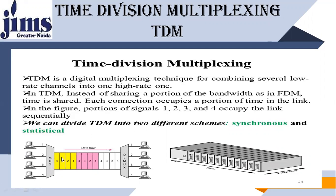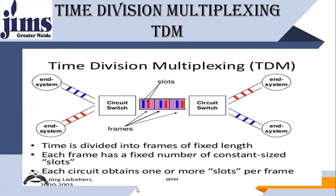Looking at this figure, we have different sources 1, 2, 3, and 4 going into a multiplexer. The yellow frames belong to source 1, another color to source 2, another to source 3, and so on. Data belonging to each source flows across the same shared medium at the same wavelength. The demultiplexer then separates data according to user 1, 2, and 4. In TDM, a frame consists of slots. Time is divided into frames of fixed length, each frame having a fixed number of constant-size slots, and each circuit obtains one or more slots per frame.